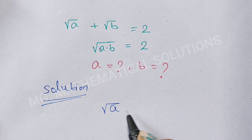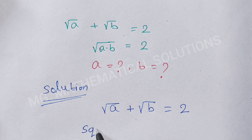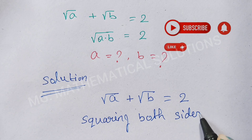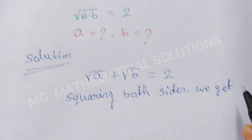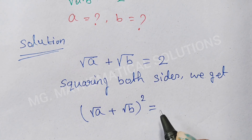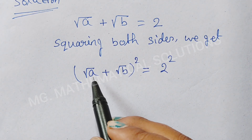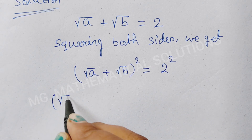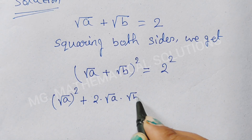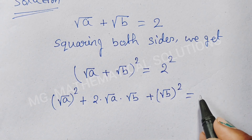Given that root a plus root b equal to 2. First we square both sides. We get root a plus root b, whole to the power 2, equal to 2 to the power 2. Now we use the formula (a + b) whole square: root a whole square plus 2 times root a times root b plus root b whole square equal to 4.